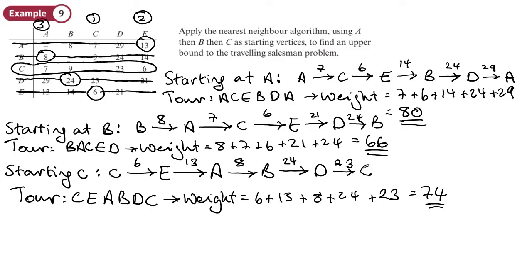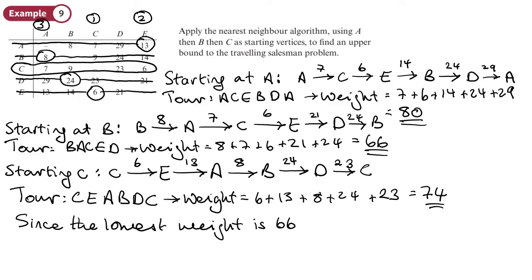To find an upper bound for this problem, we pick the lowest weight, which is 66. So we say: since the lowest weight is 66, an upper bound for this problem is 66.